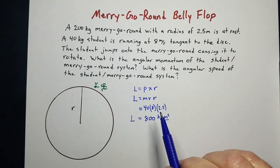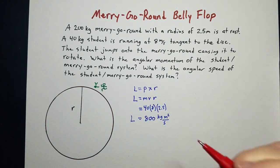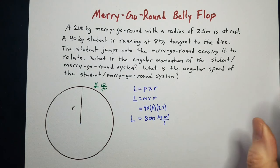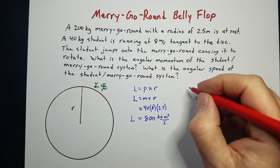Now we know the momentum of the system after the student jumps onto it. Let's figure out the angular speed of the merry-go-round now that he jumps on it. But to do that, we first need to figure out the moment of inertia of our system.